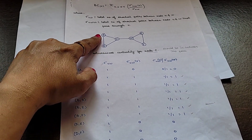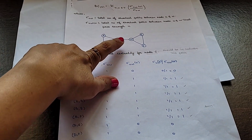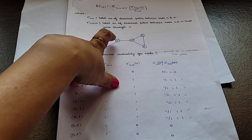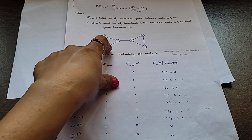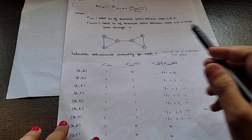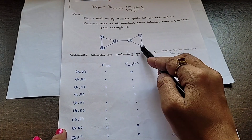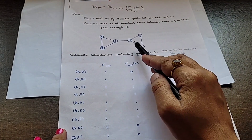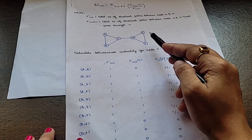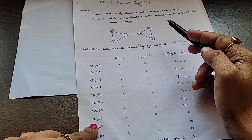Write down all the possible paths: A to B, A to C, A to D, A to E, and A to F. Then B to C, B to D, B to E, and B to F. Then C to D, C to E, C to F, D to E, D to F, and E to F. So we have written all the possible paths.